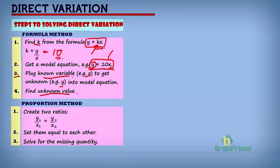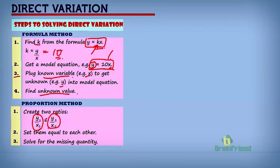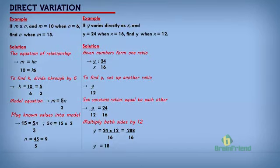In the proportion method we simply create two ratios from whatever values are given. Remember what we said about direct variations — if one variable goes up, the other goes up with it in the same proportion. So if we have values Y₁, X₁ and another set Y₂, X₂, these variables are directly related. We set the ratios equal to each other and finally solve for the missing quantity.